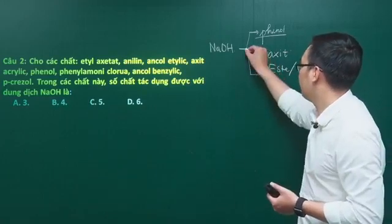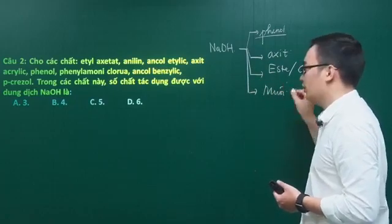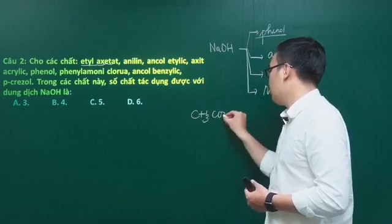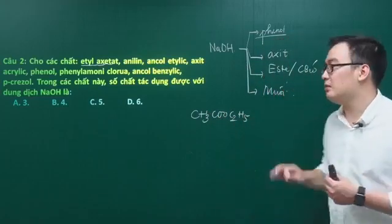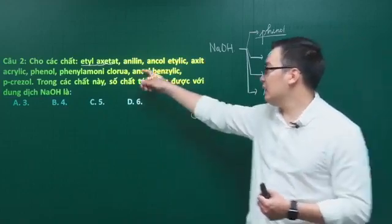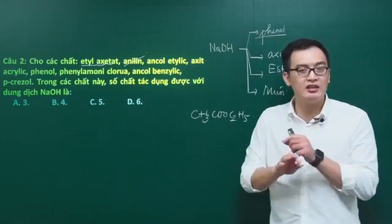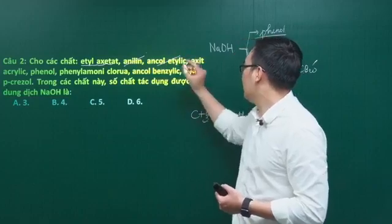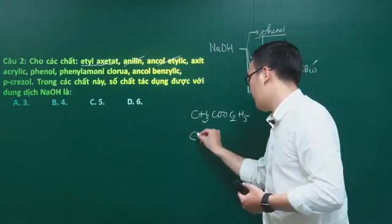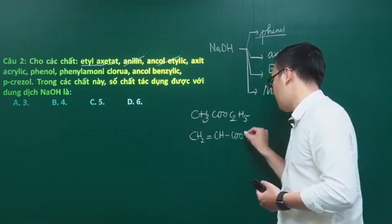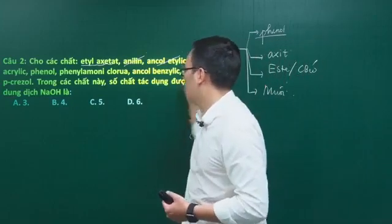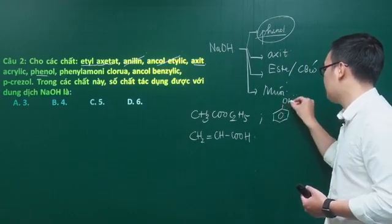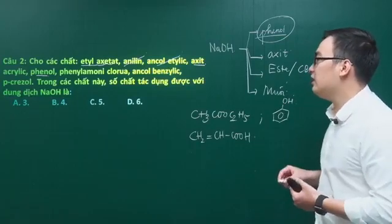Chương số 3 sẽ có một số muối. Các chất được liệt kê: ethyl acetate CH3COO-C2H5 là ester sẽ bị thủy phân trong môi trường kiềm thu được muối và ancol. Aniline không phản ứng vì aniline đã là một bazơ rồi - tất cả các amine đều không phản ứng với NaOH. Acid acrylic - nghe từ acid là 100% phản ứng. Phenol cũng có phản ứng vì phenol là acid, dù yếu hay mạnh đều phản ứng được với dung dịch bazơ.